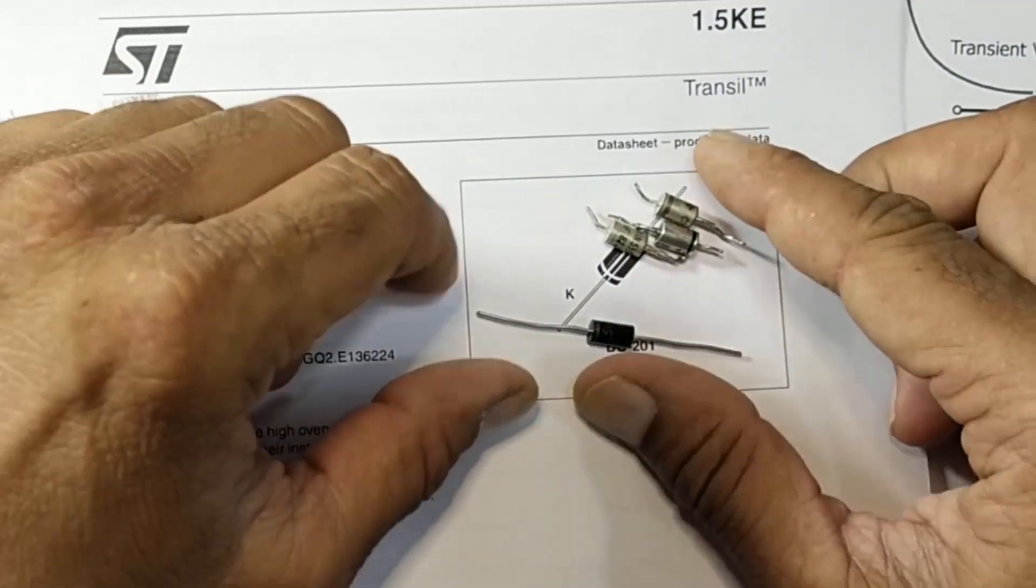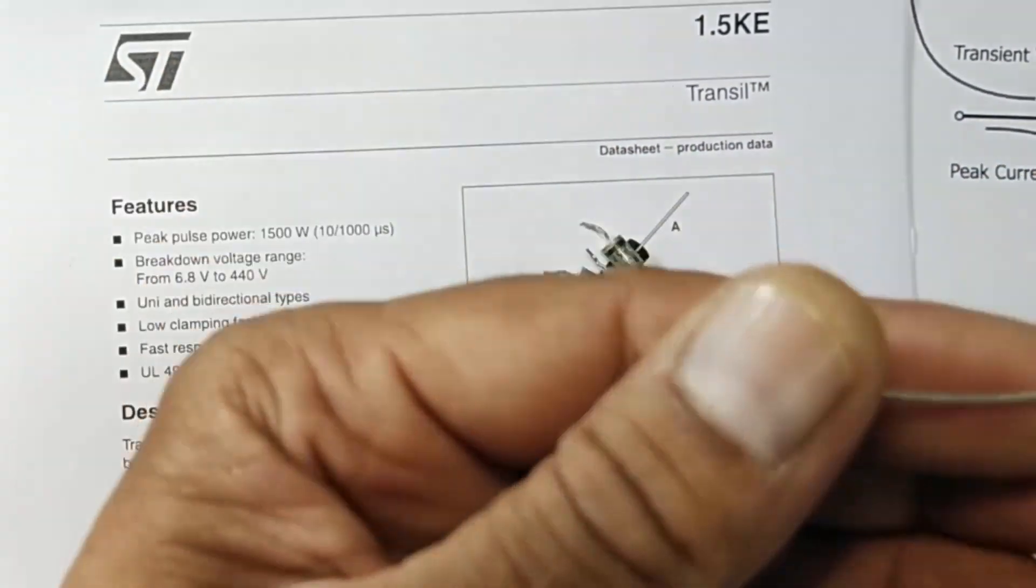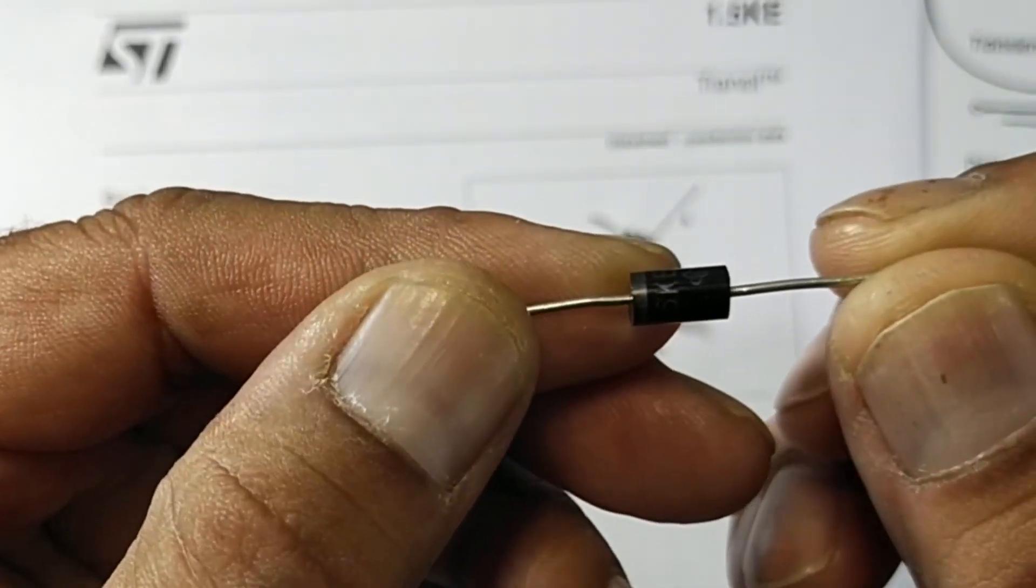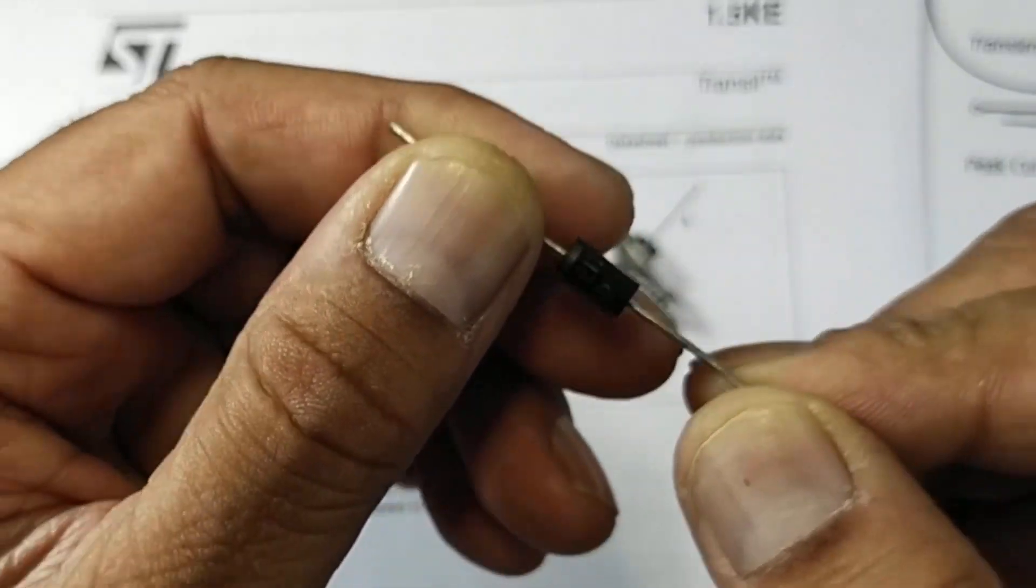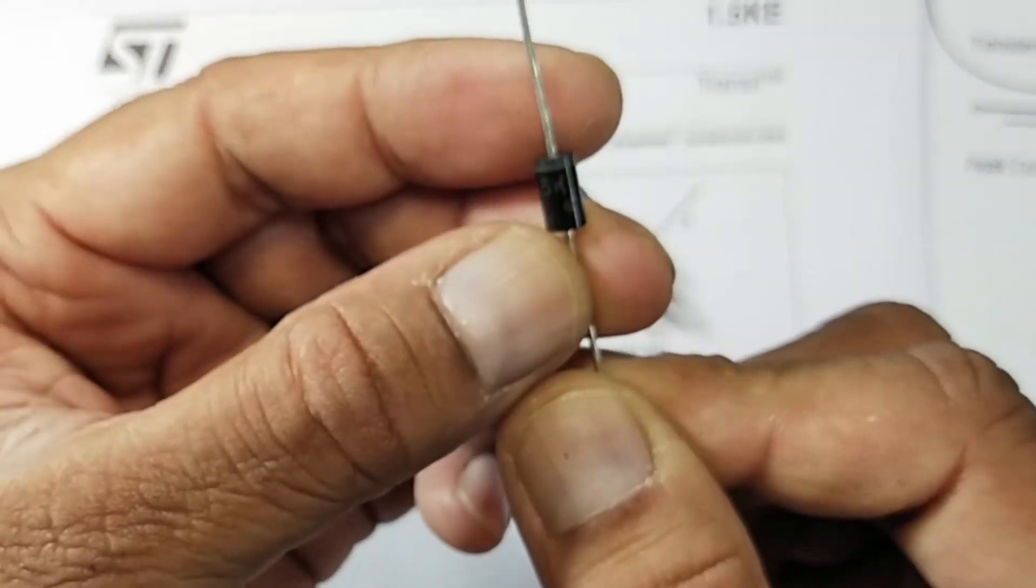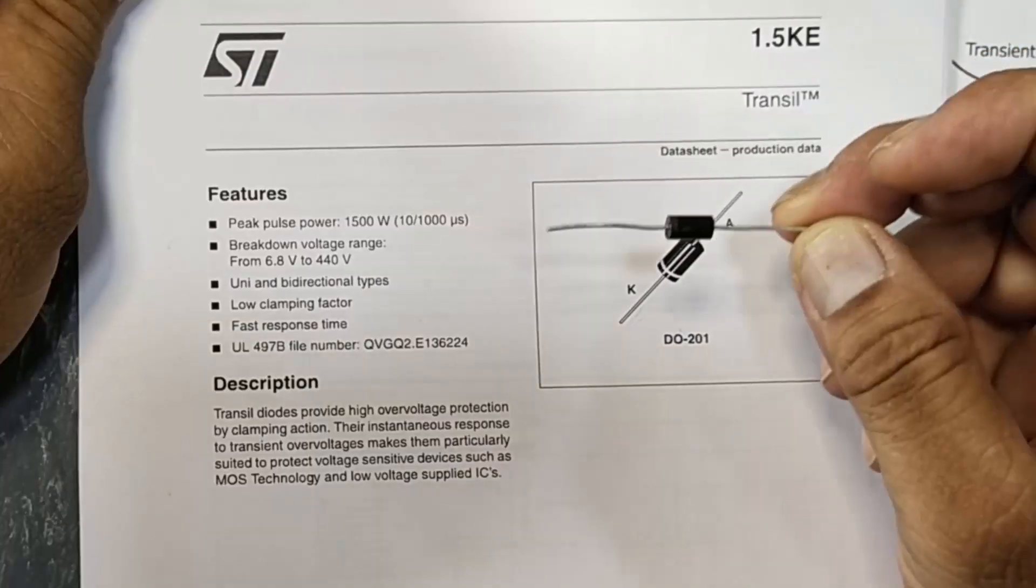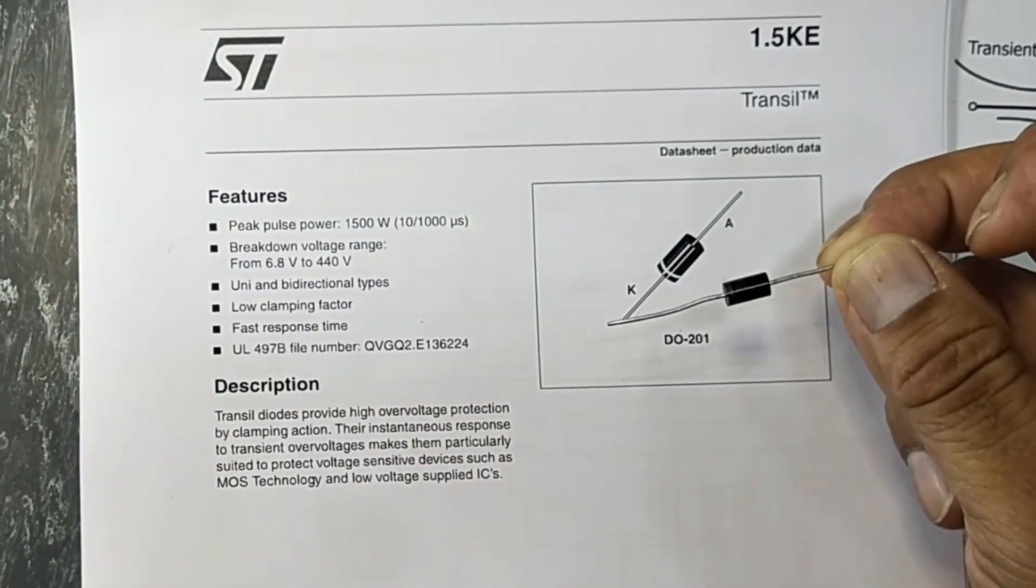These type of diodes have a color band here, ribbon here, that looks similar to diode. The part number here is written 1.5KE12. Basically it is a kind of diode, but it is called TVS - Transient Voltage Suppressor.